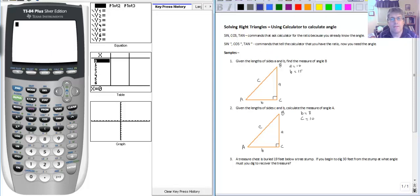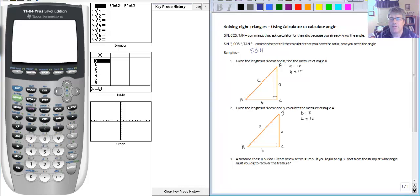So again SOH CAH TOA is going to help us out here. We're going to need to know that the sine of an angle is the opposite divided by the hypotenuse. The cosine is the adjacent divided by the hypotenuse and the tangent is the opposite over adjacent.